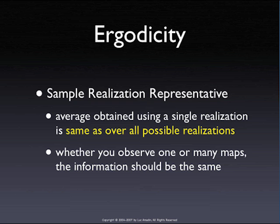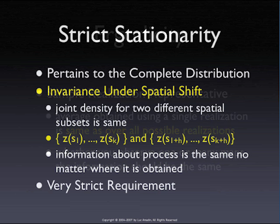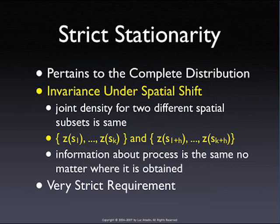Strict stationarity pertains to the full distribution and is essentially not verifiable, because a distribution is something you don't actually see — it's a mathematical concept. You can compute an empirical distribution function, a histogram, or a density function, but that's not the same thing. So what we do is first define this conceptually in terms of the distribution, and then operationalize it in terms of characteristics of the distribution that we can actually estimate — specifically moments like a mean, variance, and spatial correlation.